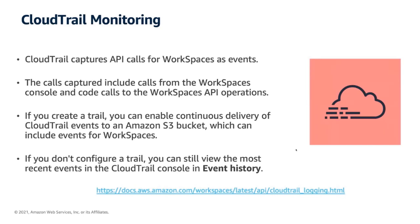At a higher level, Workspaces also participates in CloudTrail. CloudTrail is AWS's record of API calls targeting your resources. Amazon Workspaces API calls can also be correlated and analyzed using CloudTrail metrics and logs. If you create a trail, you can enable continuous delivery of this information to an Amazon S3 bucket, which can include events for Workspaces and also be used as a data store to be analyzed — whether in real time by firehoses or in separate analysis frameworks available through other AWS services. If you don't configure a trail, you can still view the most recent events in the CloudTrail console under event history.